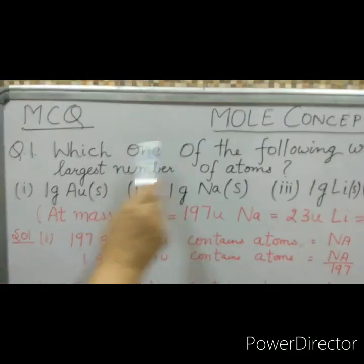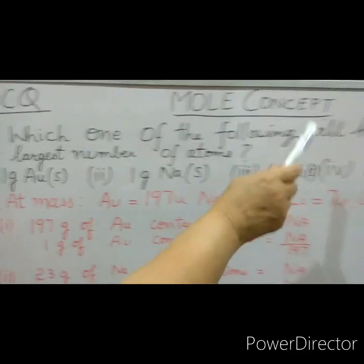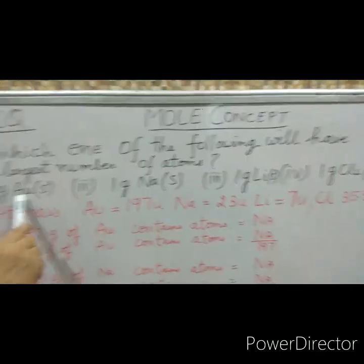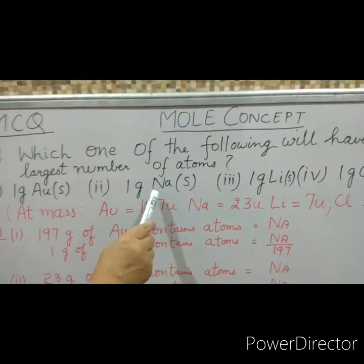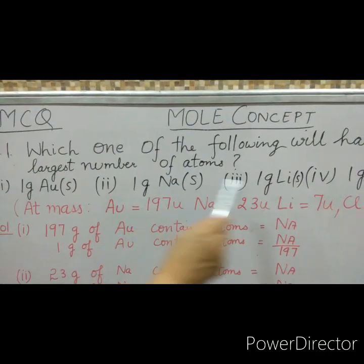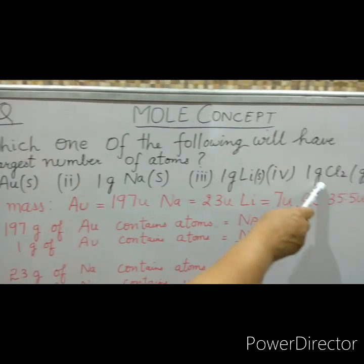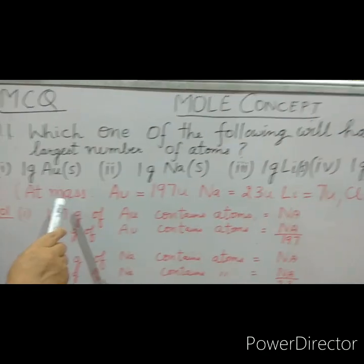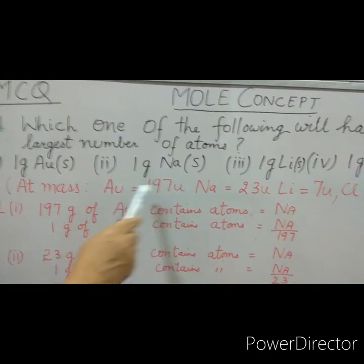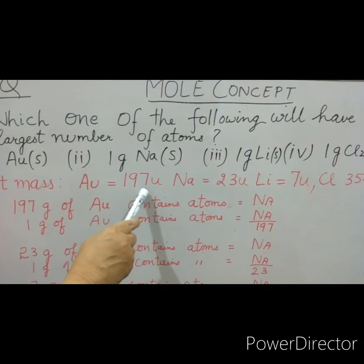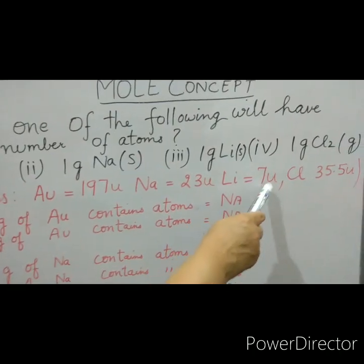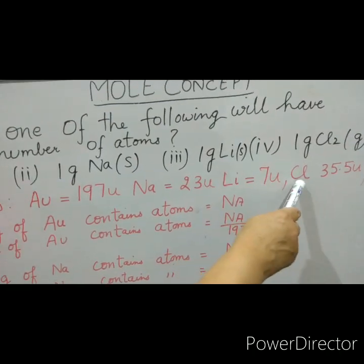MCQ under mole concept: which one of the following will have the largest number of atoms? 1 gram gold, 1 gram sodium, 1 gram lithium, or 1 gram chlorine? Atomic masses are given: gold is 197 u, sodium is 23 u, lithium is 7 u, and chlorine is 35.5 u.